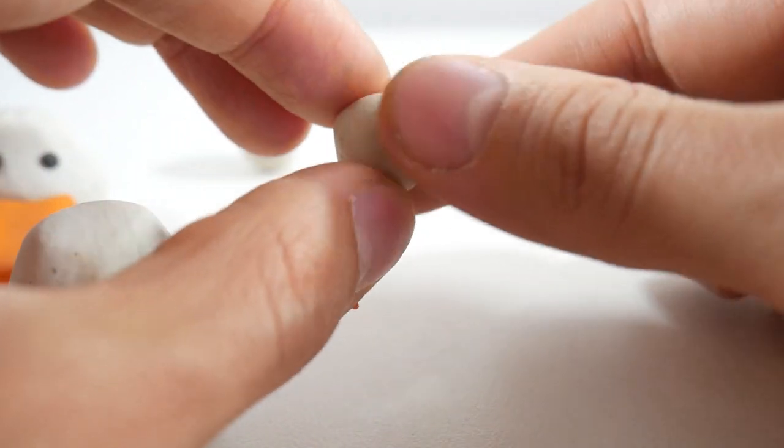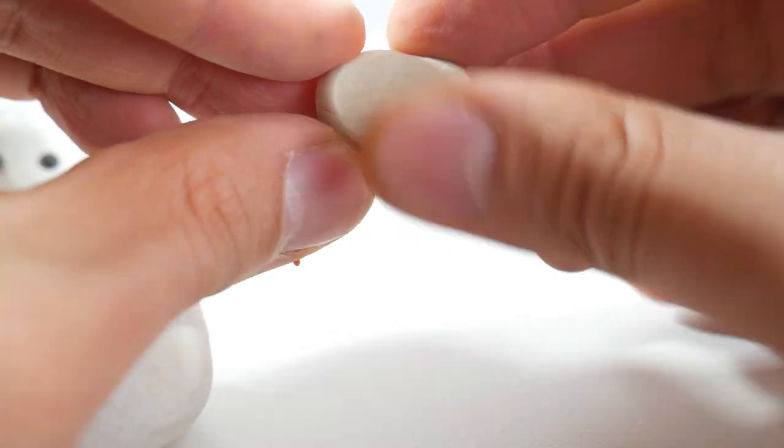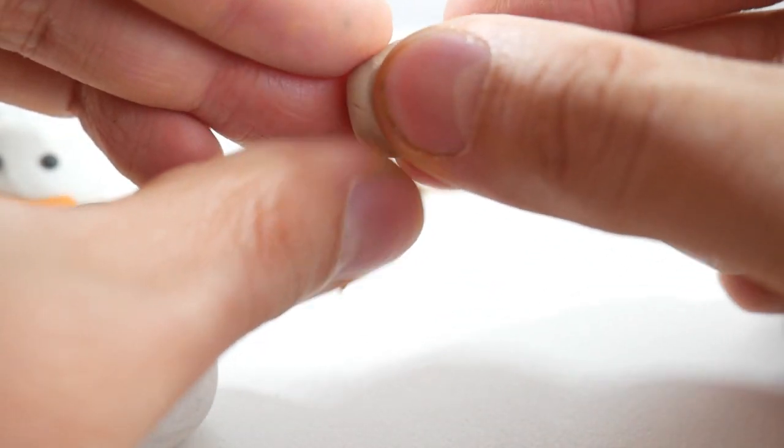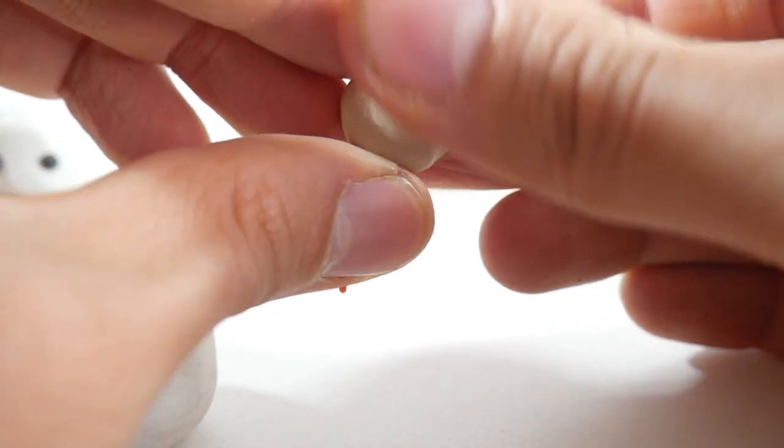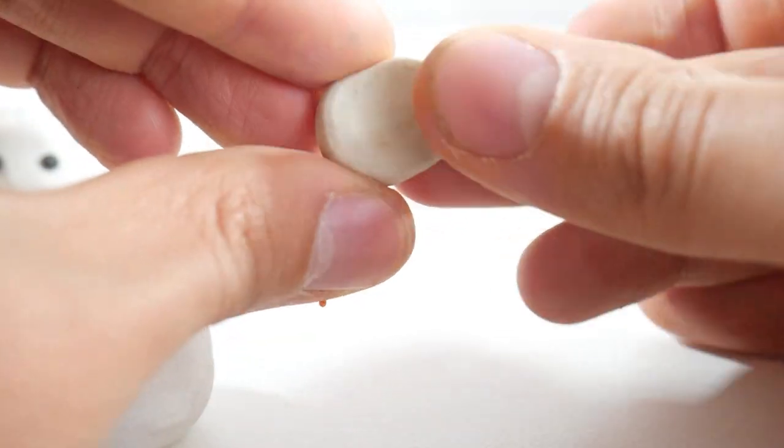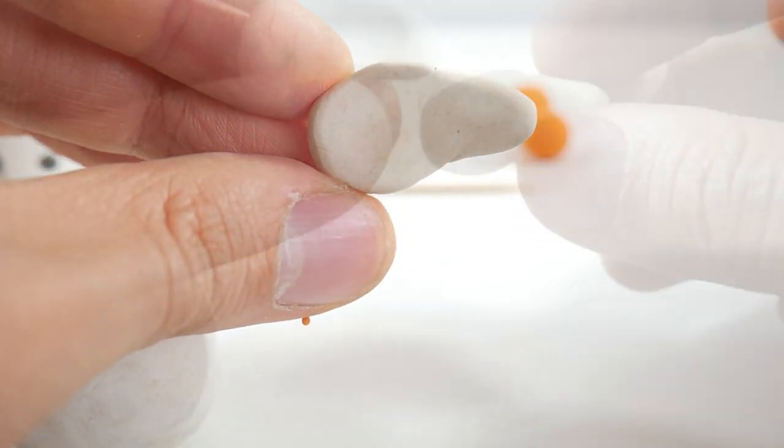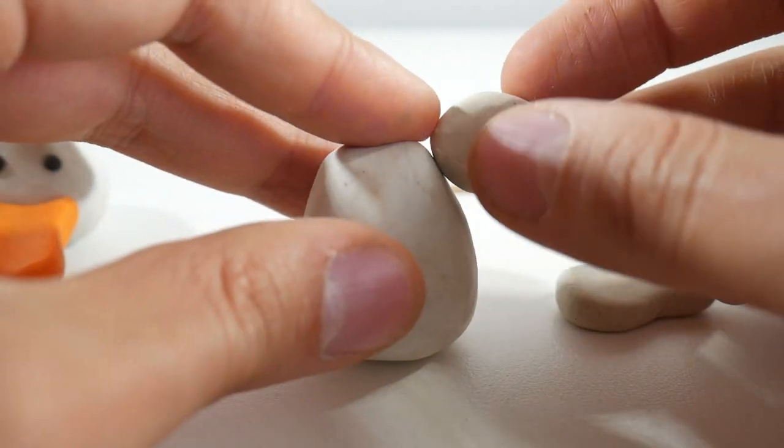Next up are the wings. For this, take two balls of white clay, flatten them slightly, and then pinch them to form a shape that looks like a comma. You got it? You need two of these, and attach them to the sides of the duck's body.